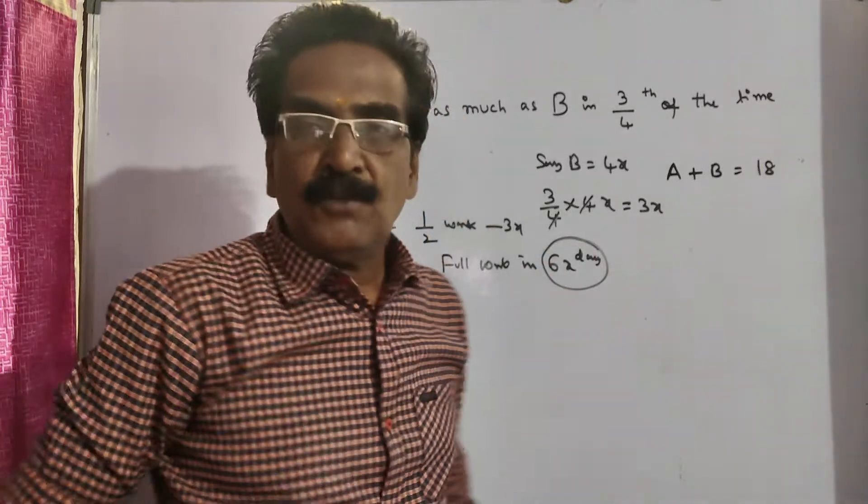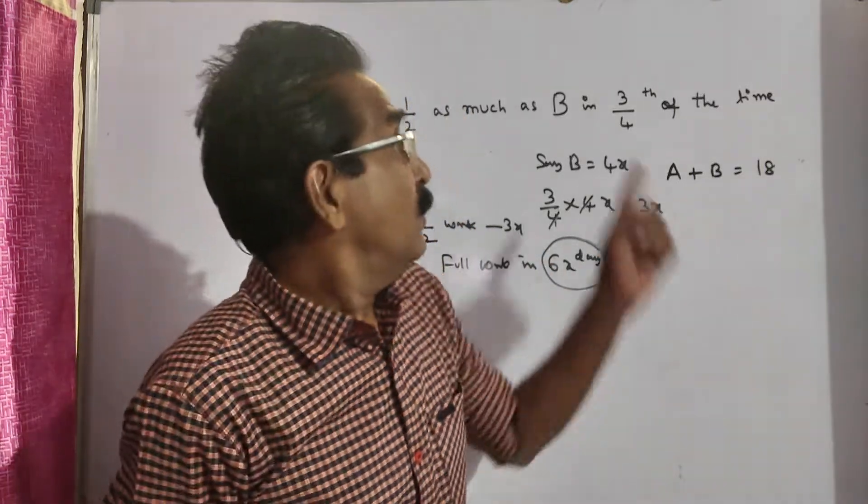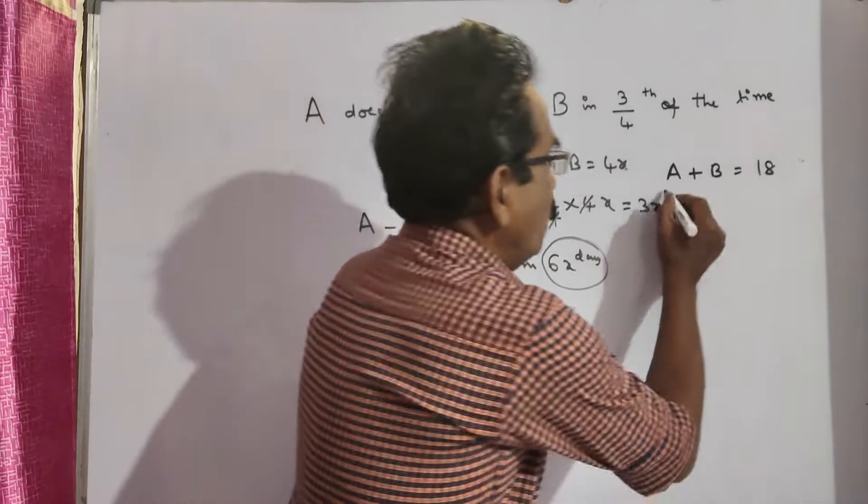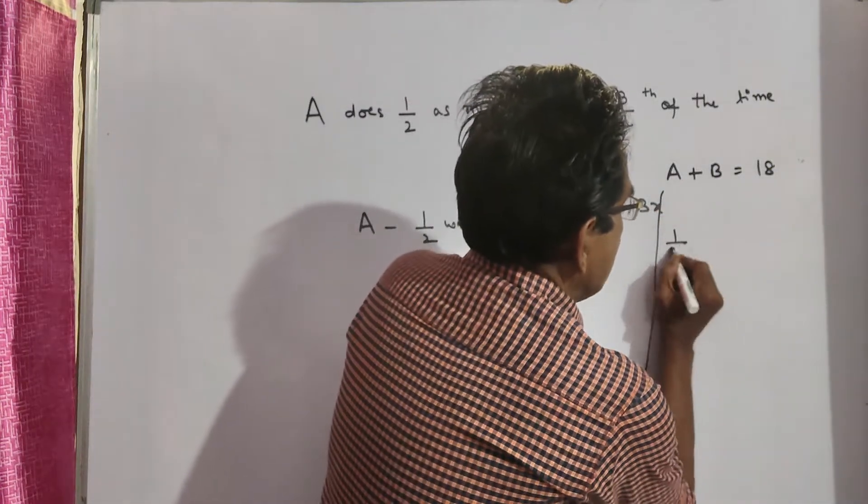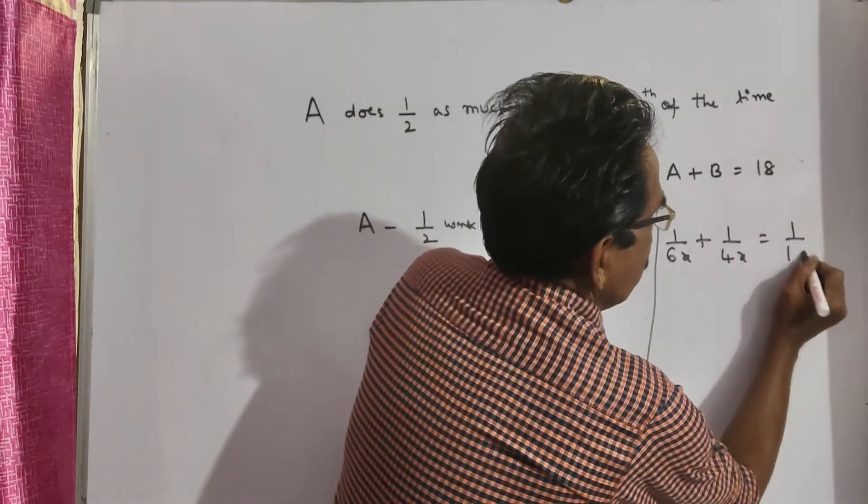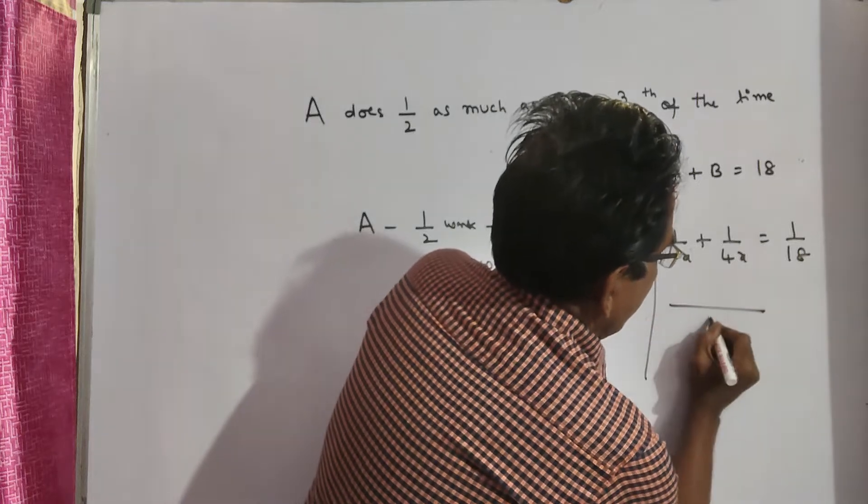So we know the time taken by A, we know the time taken by B, we know A plus B. So you can follow: 1/6x, A's worth plus B's worth is equal to A plus B's worth.